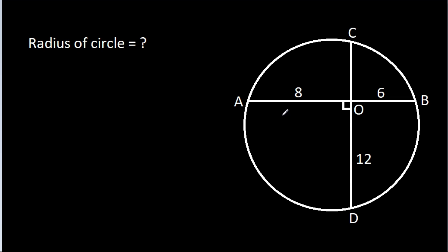In this video, we have been given that AO is 8, BO is 6, DO is 12, and we have to find the radius of the circle.